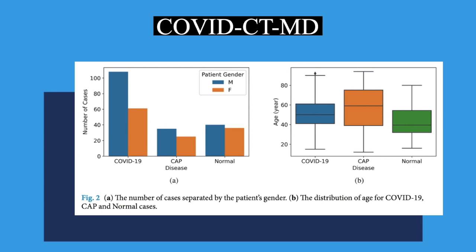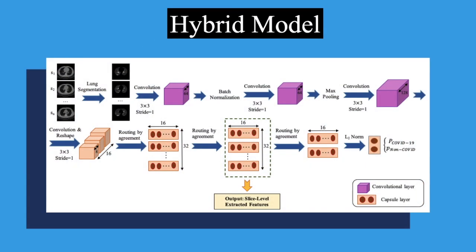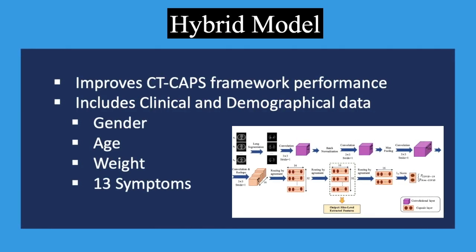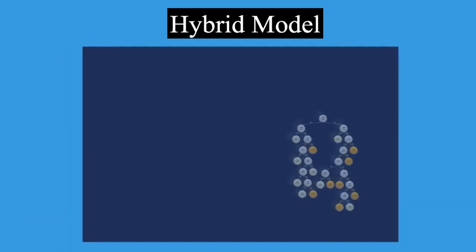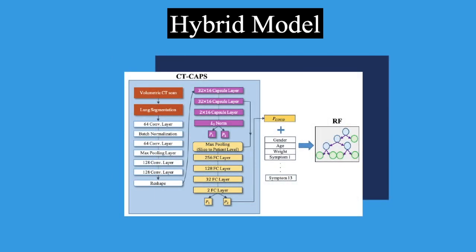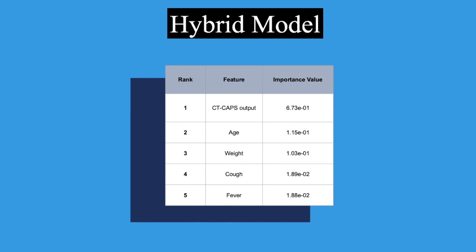Using the COVID-CTMD dataset, we leveraged the performance of COVID-Caps to develop the CT-Caps framework. Furthermore, a hybrid model was built to improve on the CT-Caps performance. The hybrid model performs better because it incorporates clinical and demographic data, including gender, age, weight, and the appearance of the 13 most common symptoms upon admission to the imaging center. The model also leverages a random forest classifier with 1,000 decision trees for diagnosis. The five most important features — the probability scores generated by CT-Caps, age, weight, cough symptom, and fever — have the most influence on the final decision.